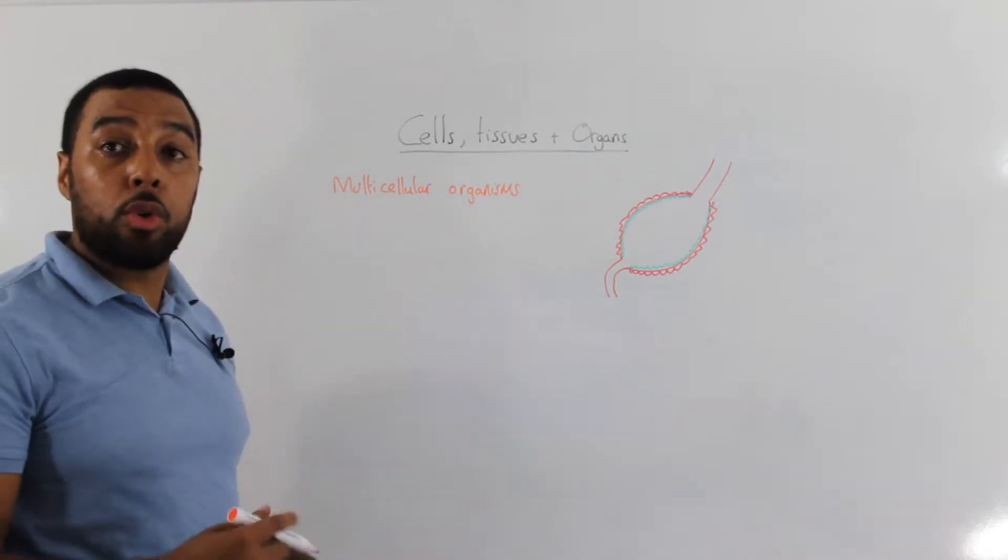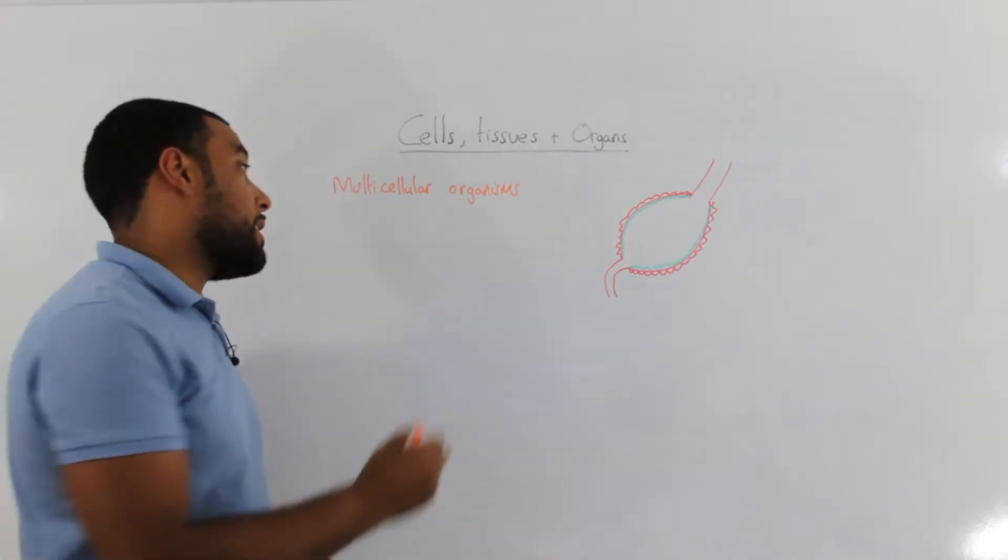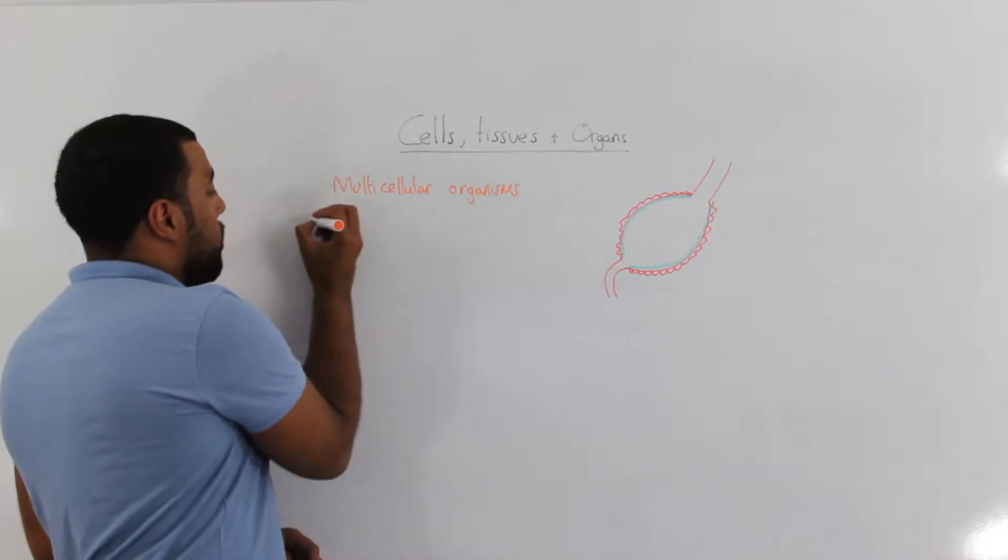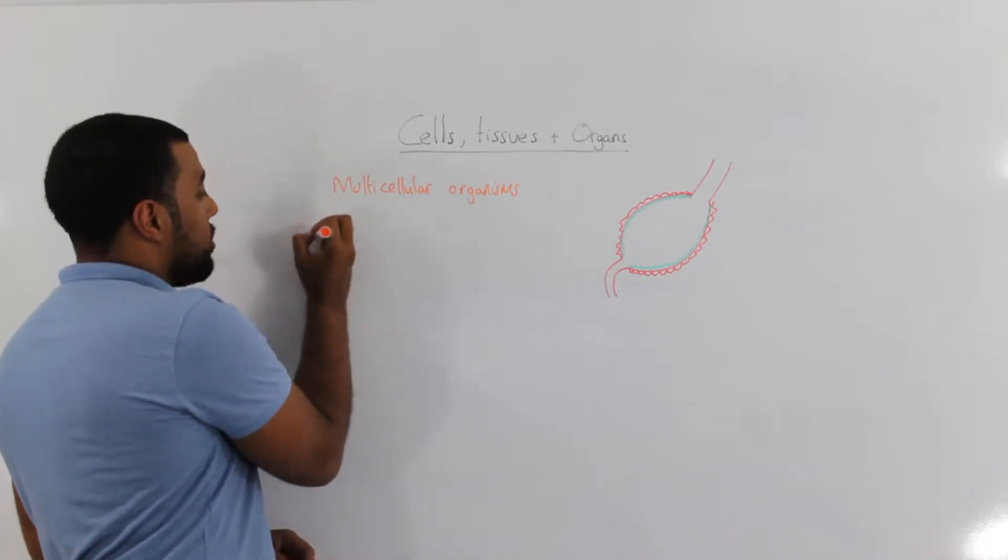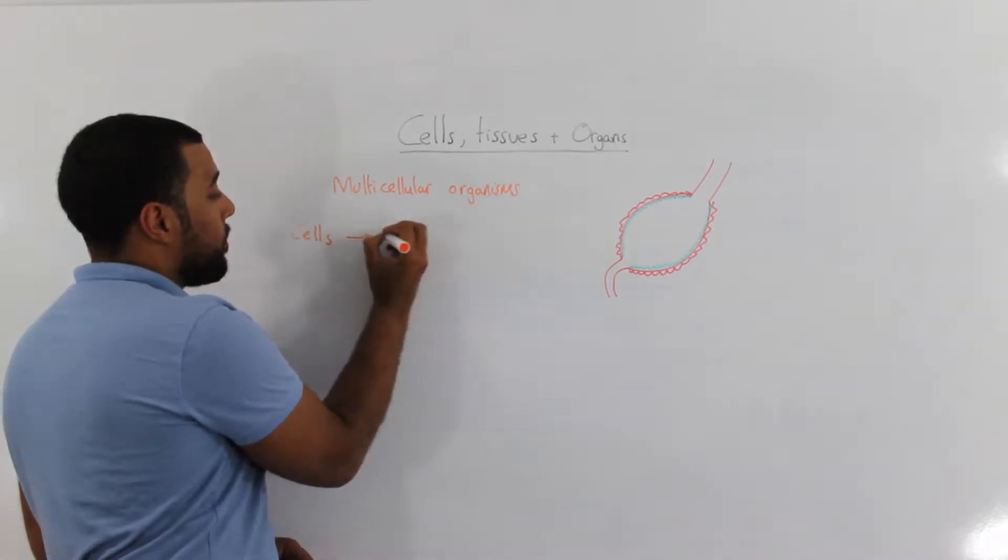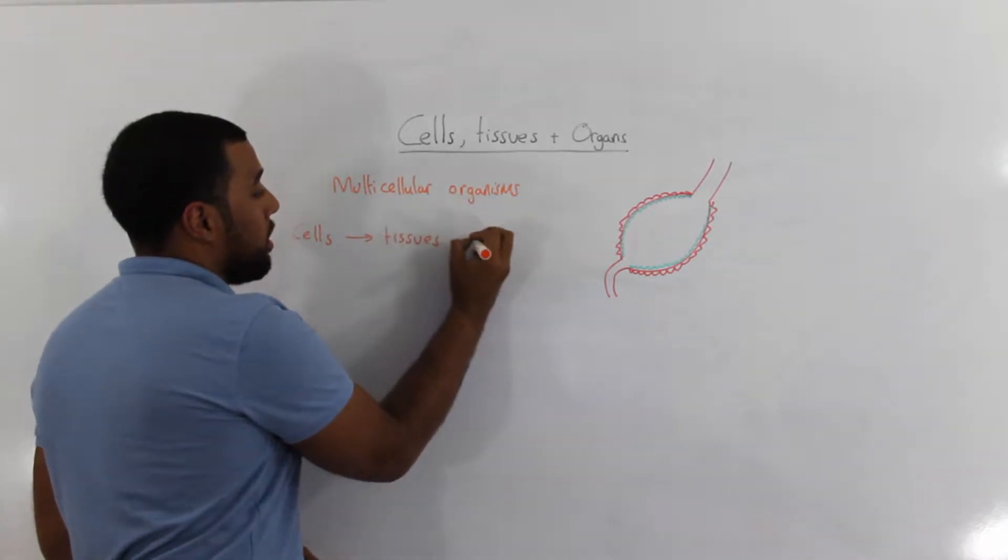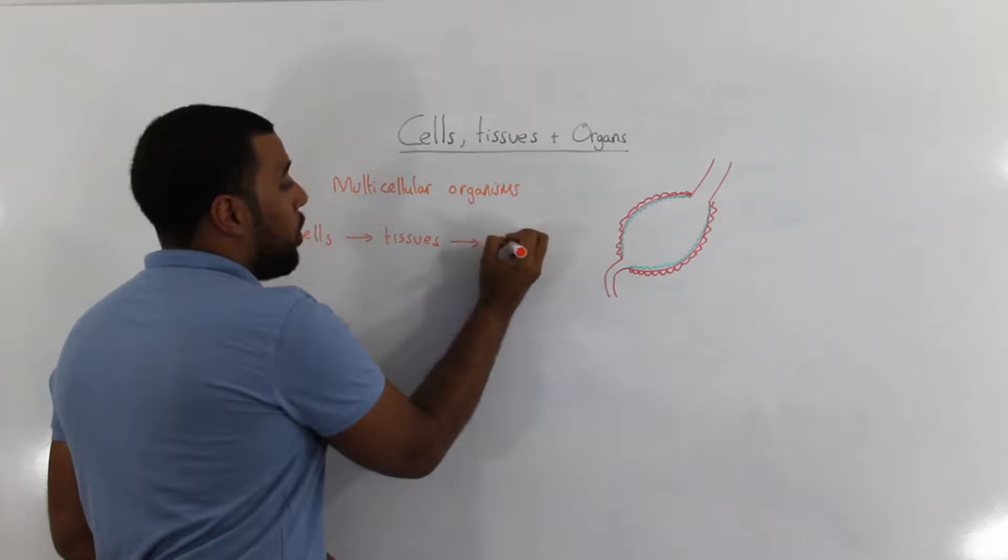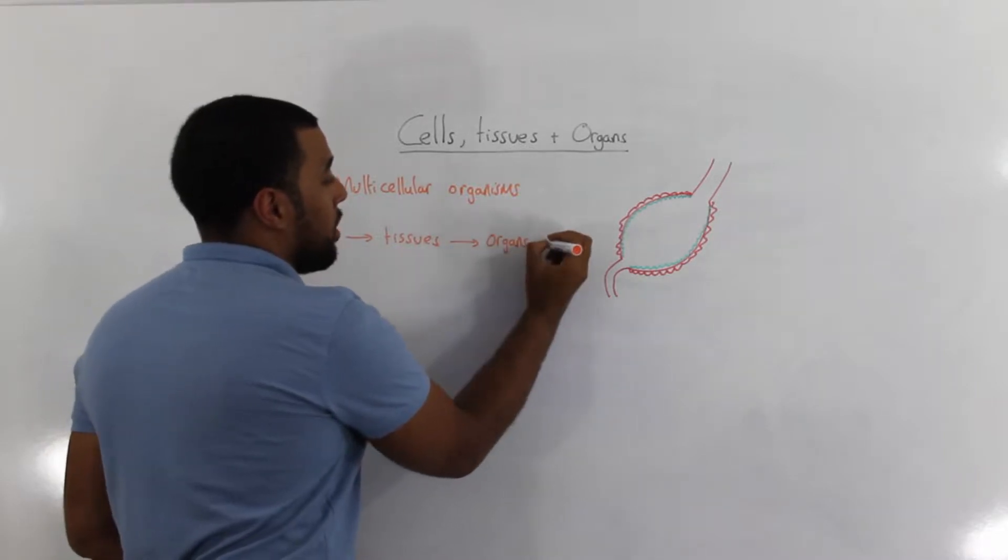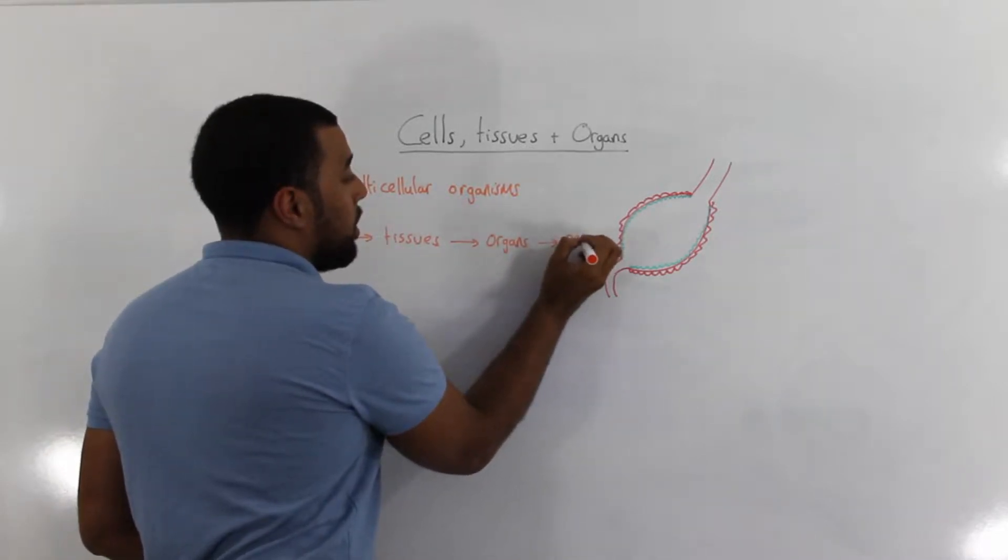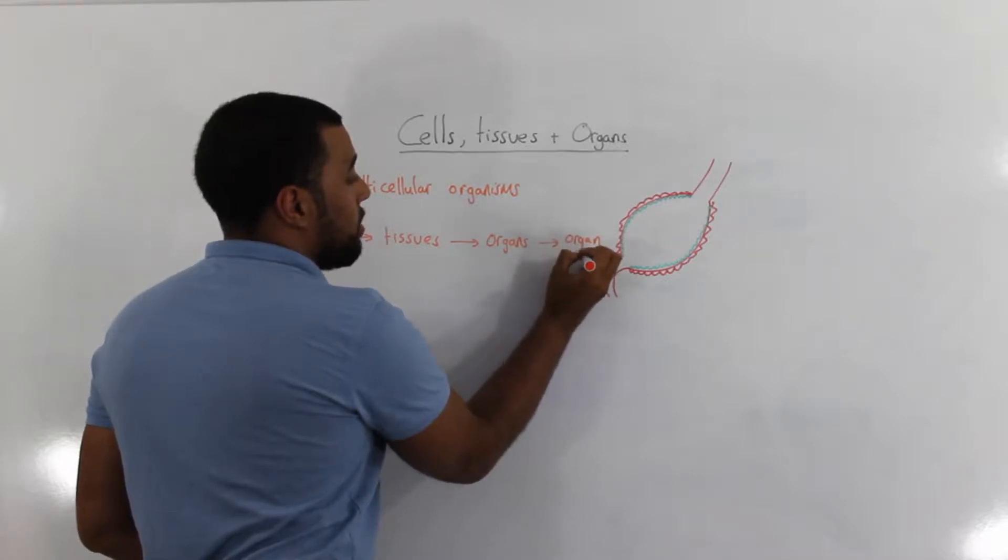Multicellular organisms also have a level of organisation. In other words we're organised in terms of cells, tissues, organs and organ systems.